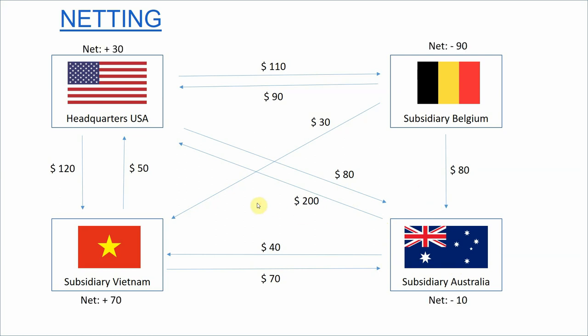In the netting system, we first look at whether each entity is a net receiver or a net payer. For example, the headquarters would receive 90 from Belgium, 200 from Australia, and 50 from Vietnam, but would also have to pay 120 to Vietnam, 80 to Australia, and 110 to Belgium.